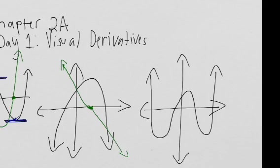Let's look at this next one. It starts by decreasing at a very steep rate, it hits a point where it's at a minimum where the slope is flat, and then it starts increasing again, then it flattens out again and the slope is flat, then it decreases. The slope is flat, then it increases from that point on. So we sketch: it starts by decreasing at a steep rate but steadying out, then hits a totally flat slope, starts increasing, steadies out, then flat again, decreasing, then flat again, and then increasing from that point on.